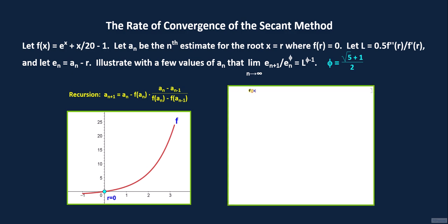First, we define f of x, which is e to the x power plus x divided by 20 minus 1. Then, we define r, r equals 0. Then, we define phi.